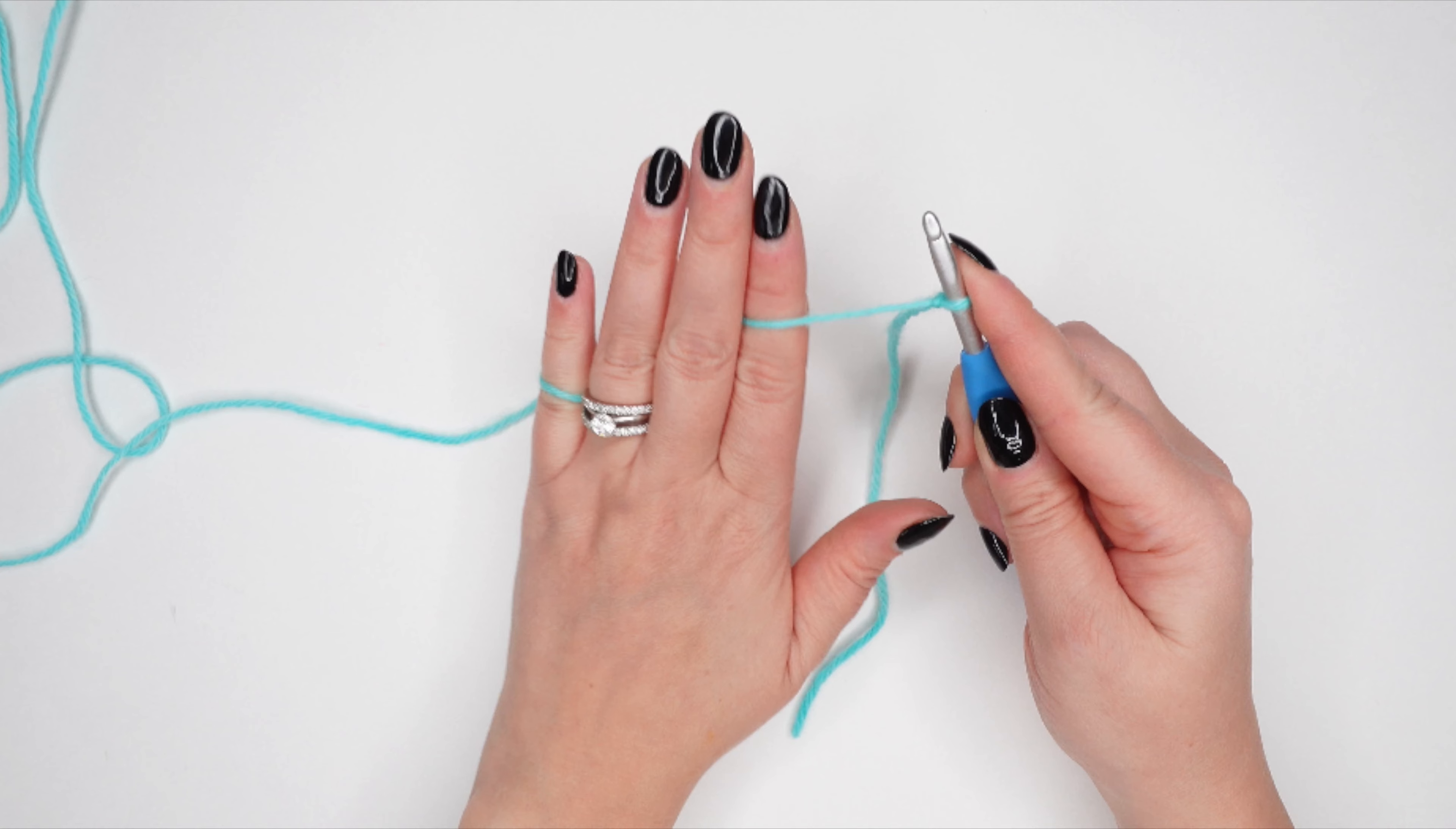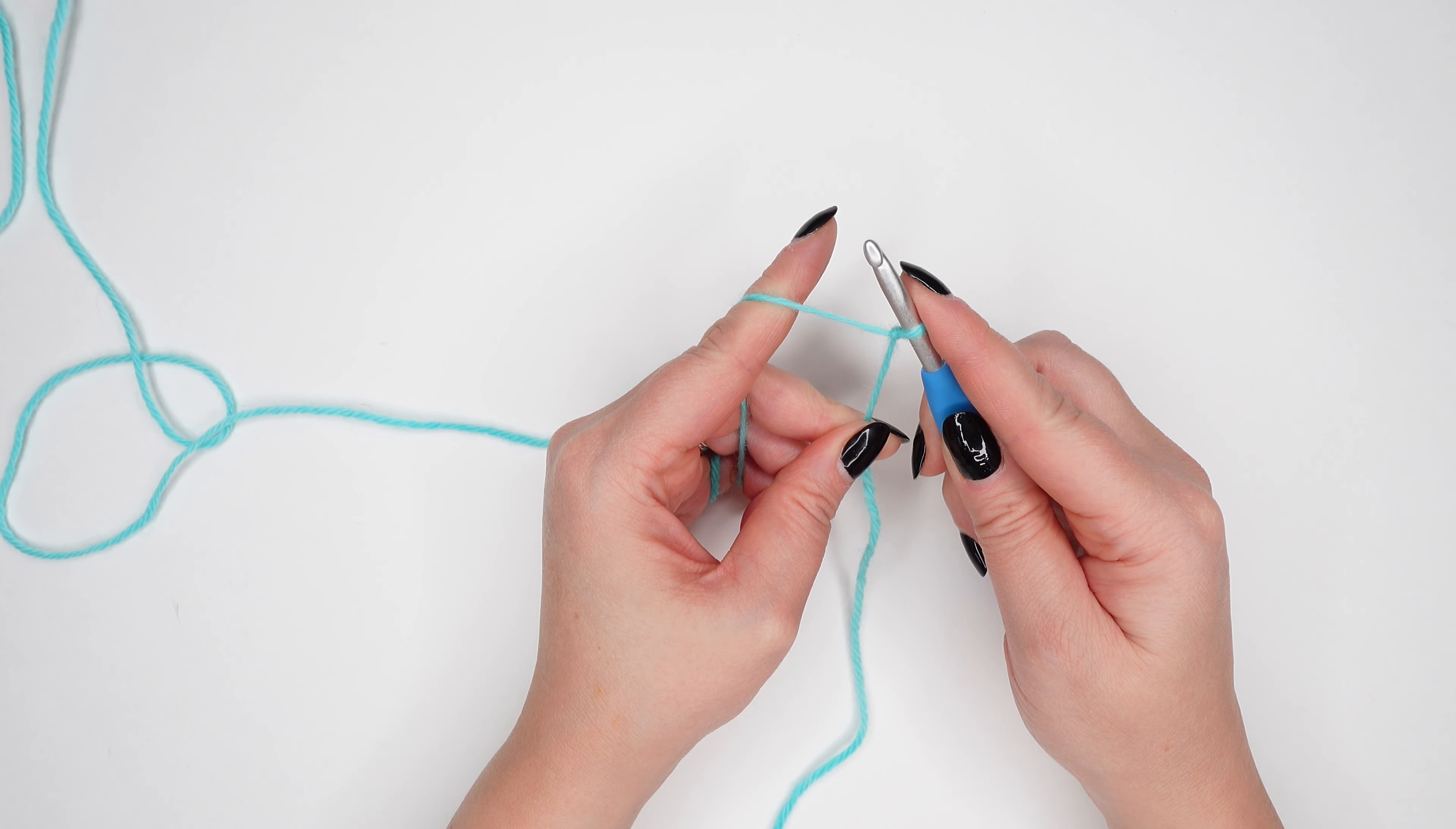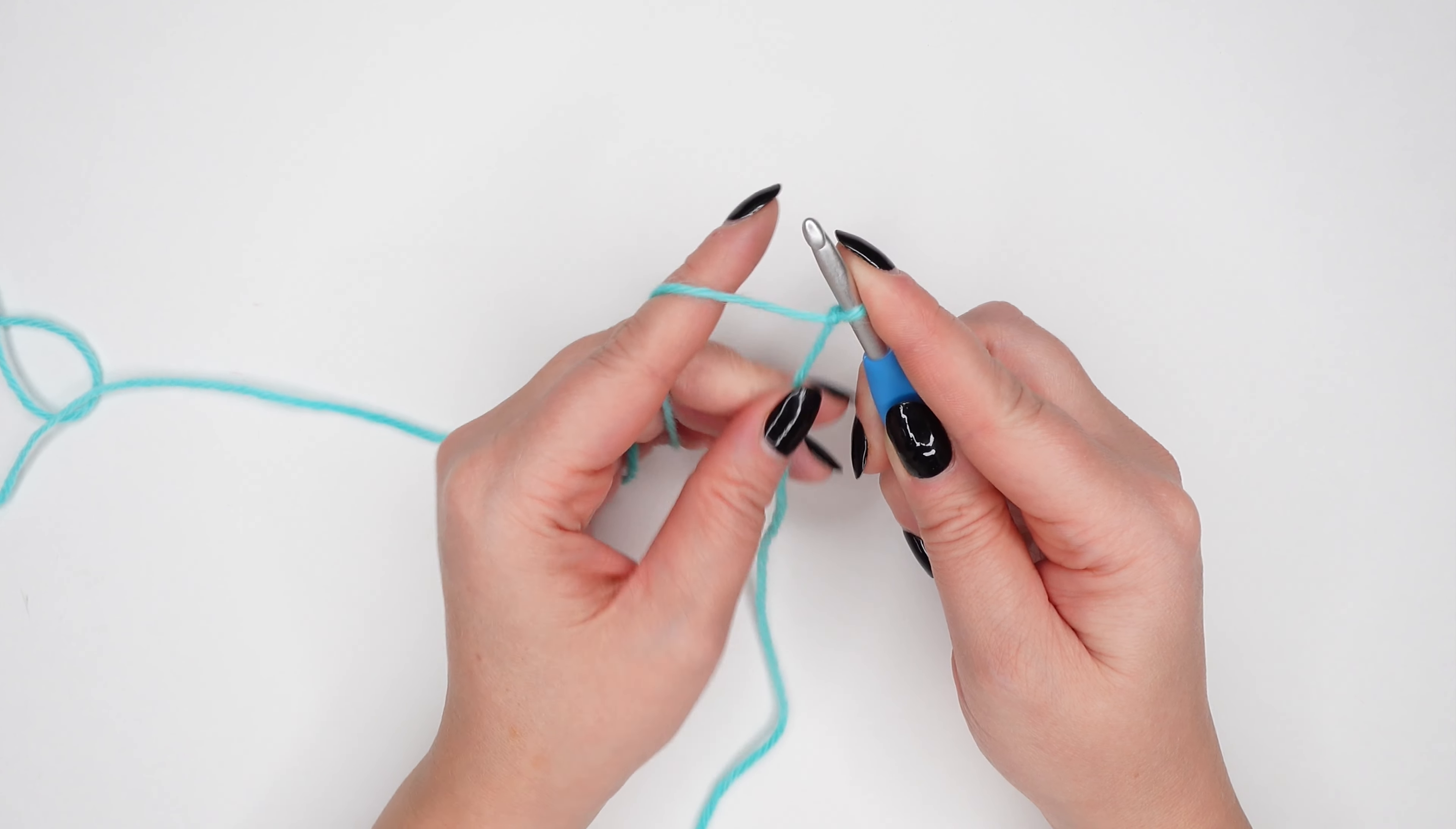So let's get comfortable here. Secure the slip knot on your hook with your pointer finger and give your yarn a few gentle tugs to get a feel for this position.